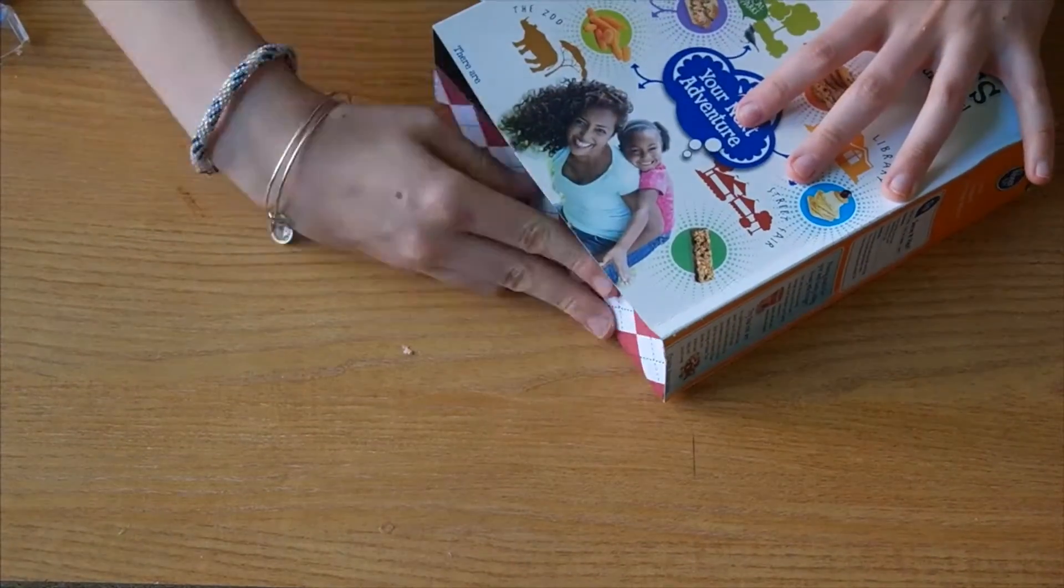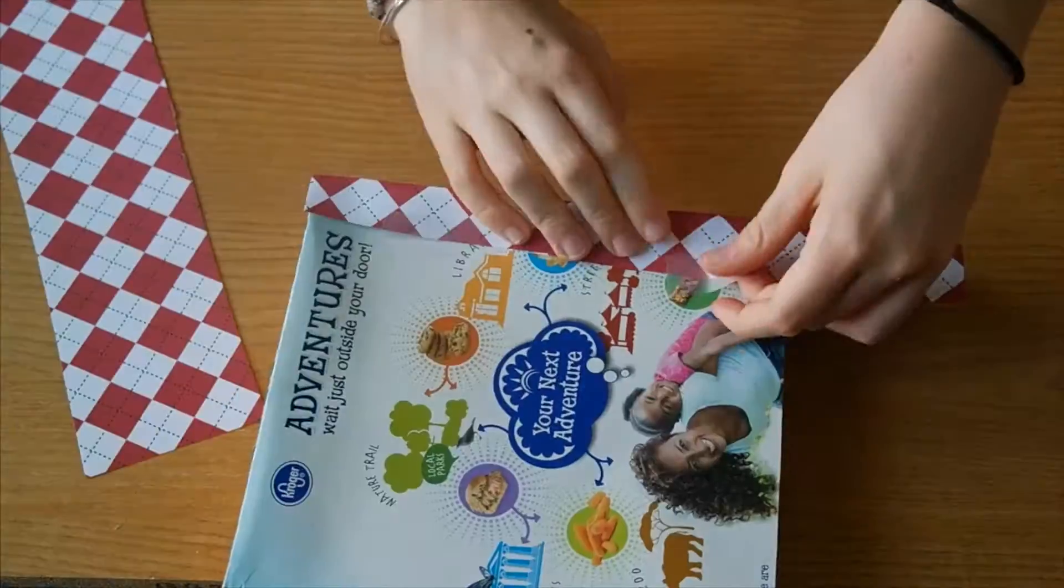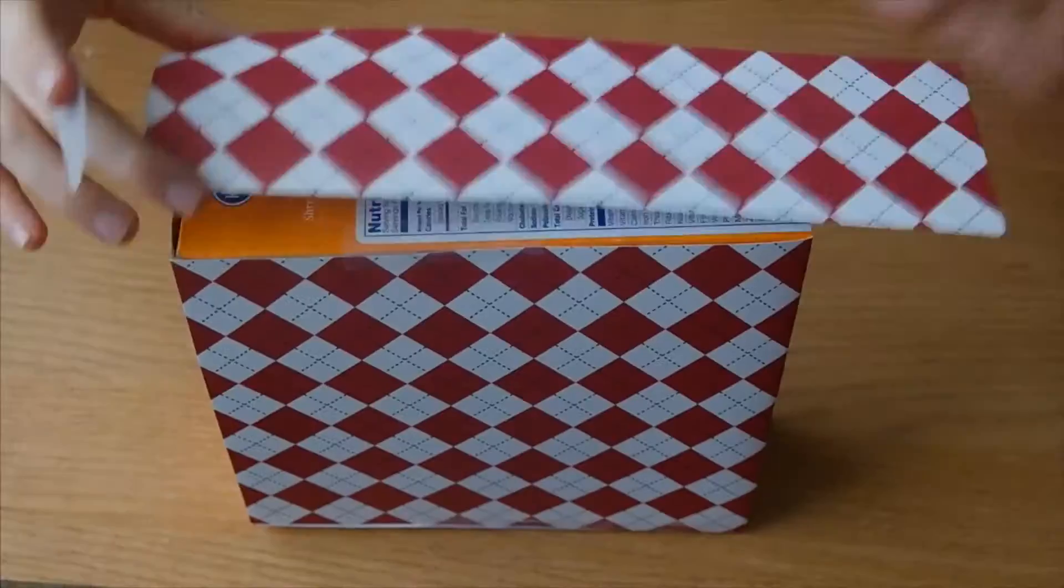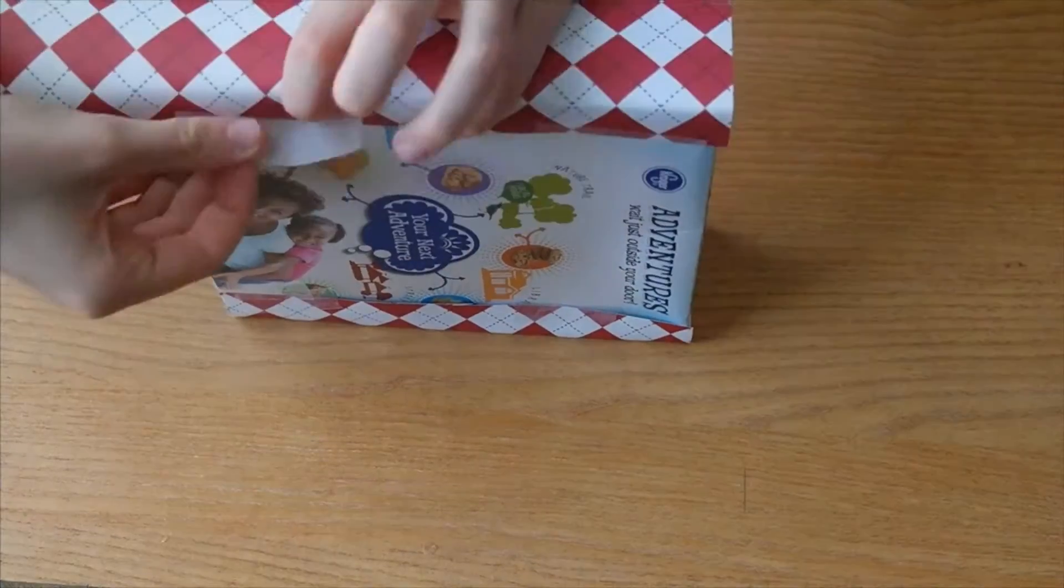Make sure to cover three sides of your box, so the front and the two sides, and you can cover the back if you'd like, but chances are you won't be able to see it, so you can just leave it.